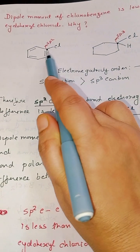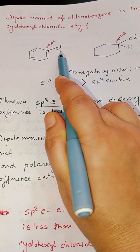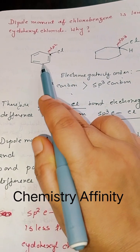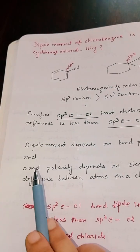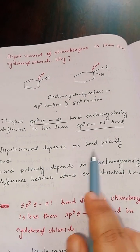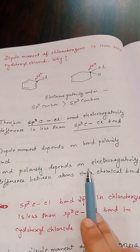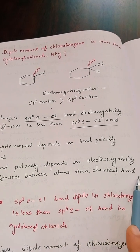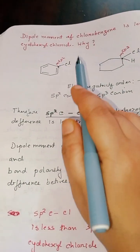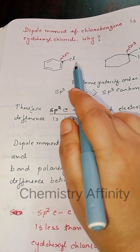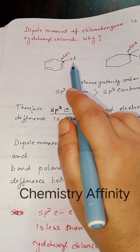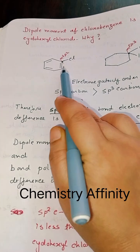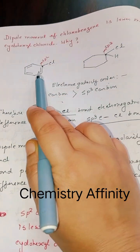Less electronegativity difference means less bond polarity, and less bond polarity means the dipole moment value will be less. Dipole moment depends on bond polarity, and bond polarity depends on the electronegativity difference between the atoms in a chemical bond. Since in chlorobenzene the carbon is sp2 hybridized, the carbon-chlorine electronegativity difference is less, so bond polarity is less and the dipole moment value will be less.